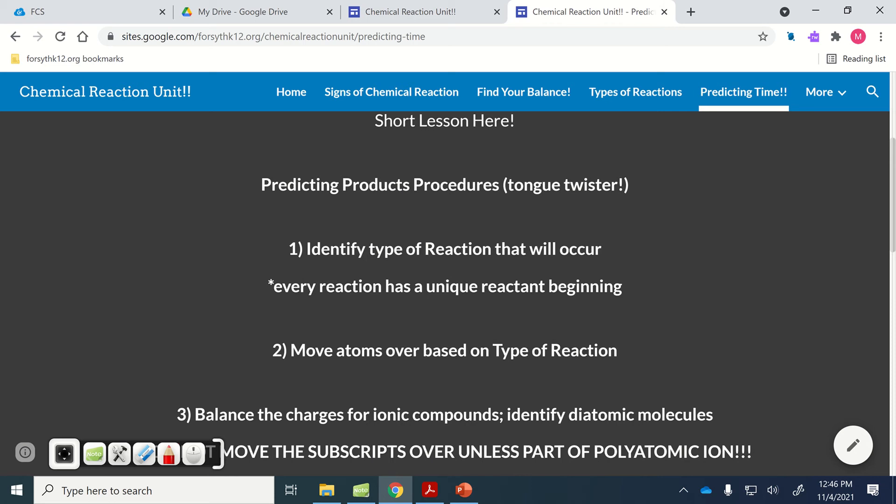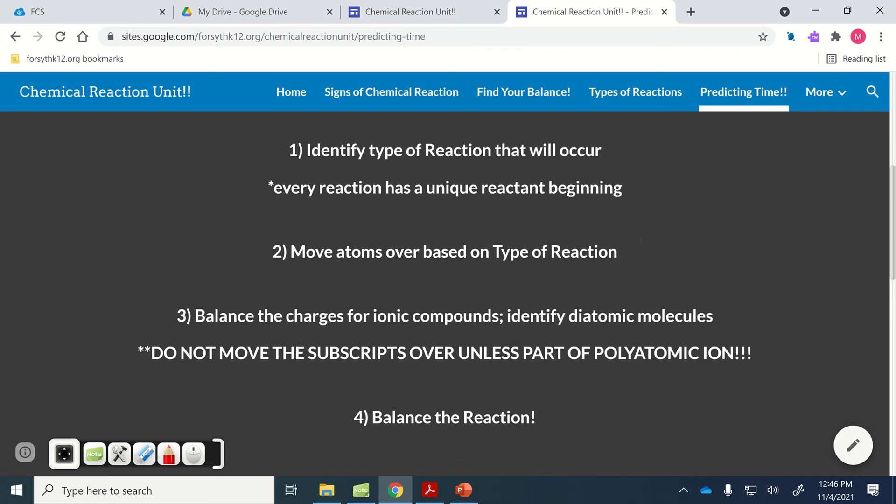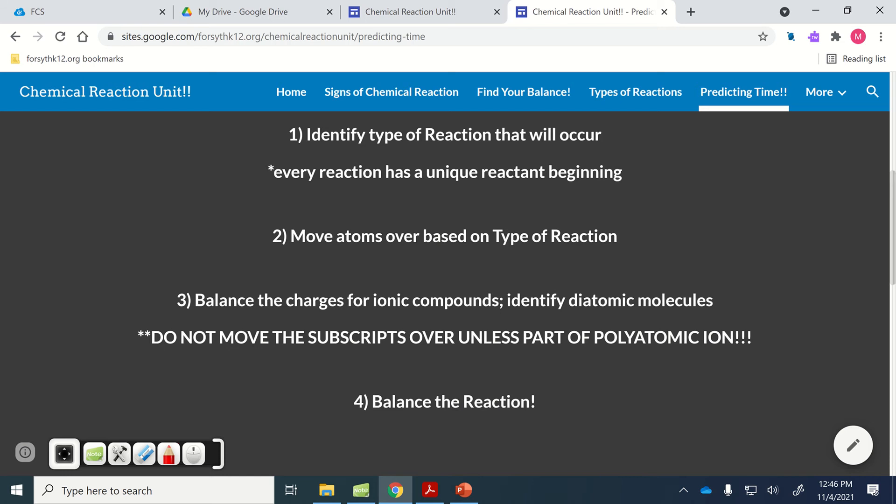So with predicting products, procedure: you got to identify the type of reaction that will occur first. That's really the key to this. That's why you need to know your five different types of reactions: synthesis, decomposition, single replacement, double replacement, and combustion. Because each one has a particular method of what happens between reactants to products. Synthesis is A plus B forms AB. Single displacement is AX plus B forms BX plus A or AB plus X, depending on whether it's a halogen or metal. So you need to identify the type of reaction and then move the atoms over based on that type of reaction. We're going to move all that stuff over to the other side.